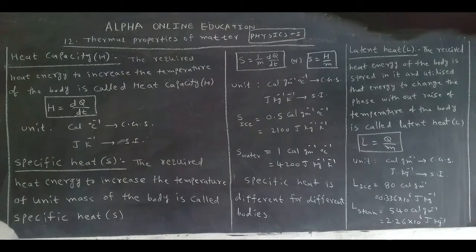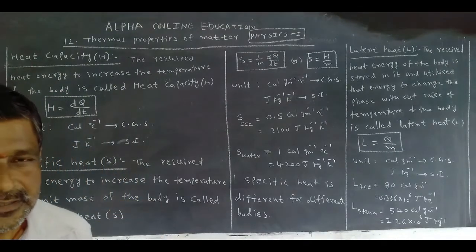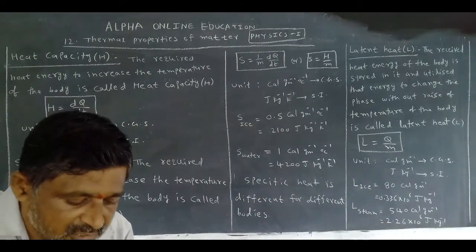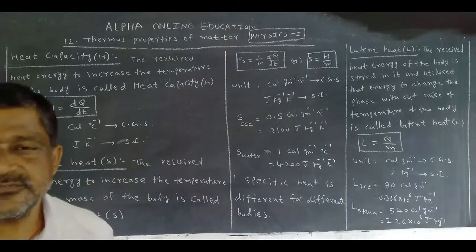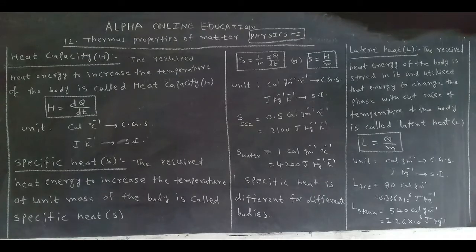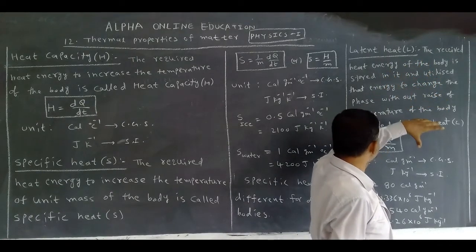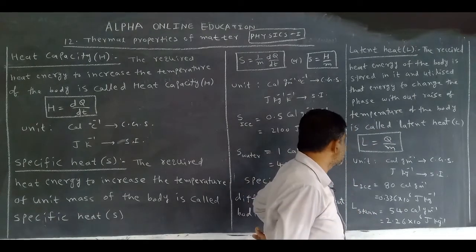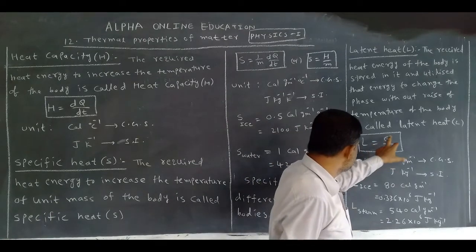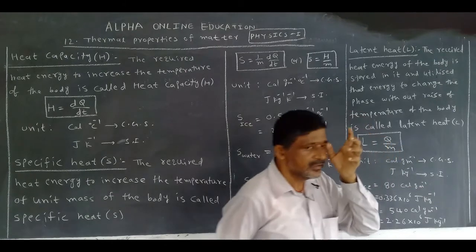In winter season we can also see this with coconut oil, which becomes frozen. If you keep it on a stove or in sunshine, until it converts into liquid form, its temperature does not increase. At that time, it stores the energy and utilizes it to change its phase — that is called latent heat. The symbol is capital L and the mathematical expression is Q by M.